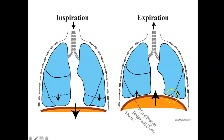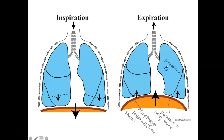With decreased lung volume, applying Boyle's Law, pressure inside the lungs increases — slightly above atmospheric pressure. Since gases flow from high pressure to low pressure, they leave your lungs. If you didn't quite understand this, pause the video and watch it a few more times, as it does take some repetition to understand.